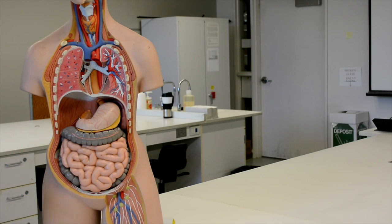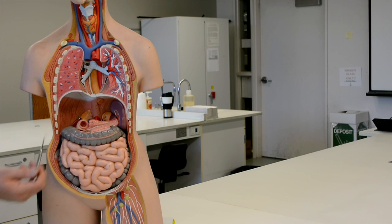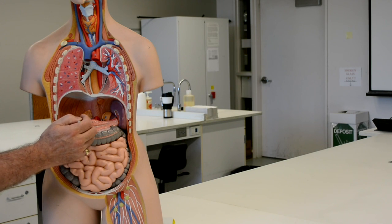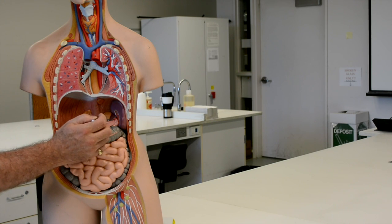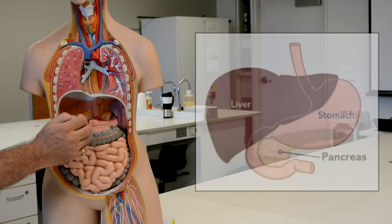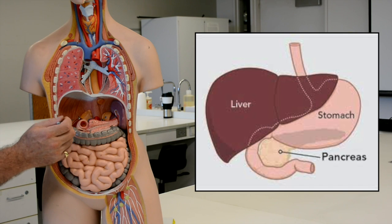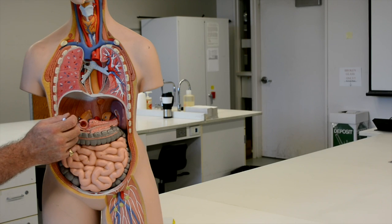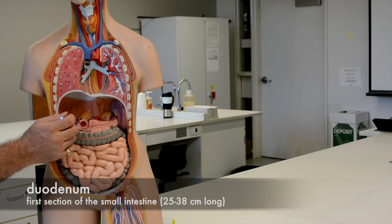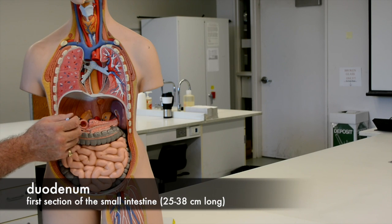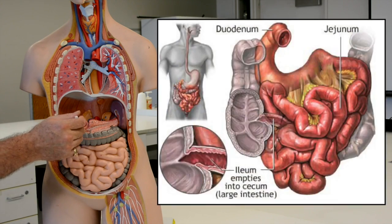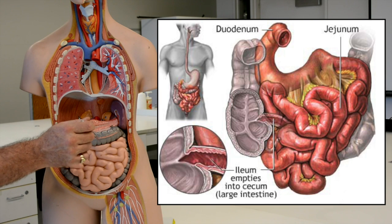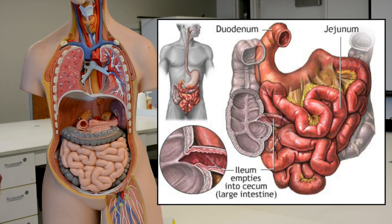Now we'll remove the stomach. Here we can also see another accessory organ, the pancreas, and we can get a better view of the duodenum. The duodenum is retroperitoneal, which means it's outside of the peritoneum, and it loops around and comes back in.